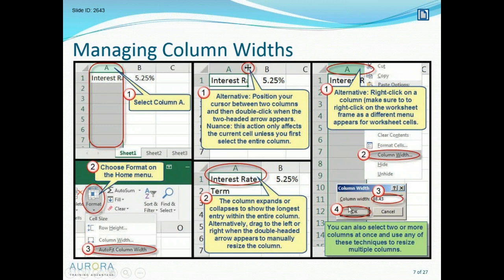Fast and easy can sometimes come back to haunt you. Many reports dumped out of software have a legal disclaimer paragraph appended at the bottom, and that text is in column A. When you try to widen column A, the column suddenly shoots out wider than your screen — because Excel is widening it to display that entire paragraph of text in a single column — and you can't reach the right-hand edge to make it smaller.